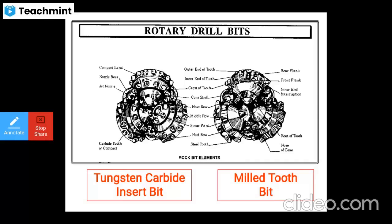The rock bit elements include the carbide tooth, jet nozzle, nozzle bars, compact land, rear flank, front flank, inner rail, interruption, root of tooth, nose of cone, steel tooth, heel row, square point, middle row, and nose row.